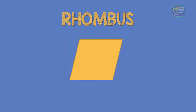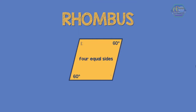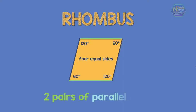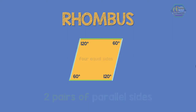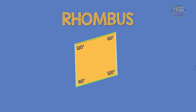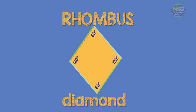The next example of a quadrilateral is the rhombus. A rhombus has four equal sides and all the opposite angles are equal. Just like the square and rectangle, a rhombus is made from two pairs of parallel sides. A rhombus is sometimes called a diamond.